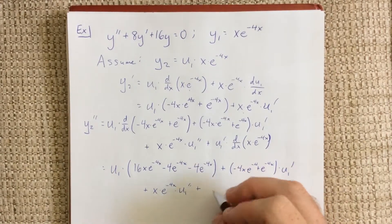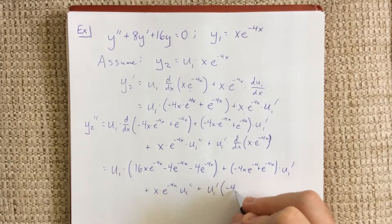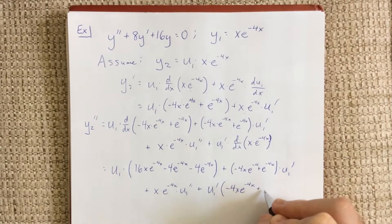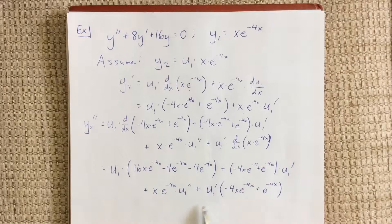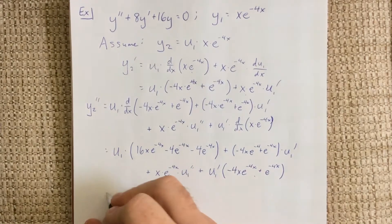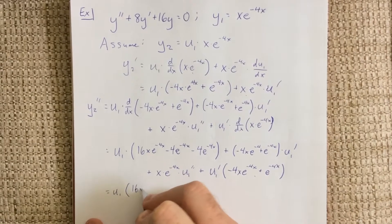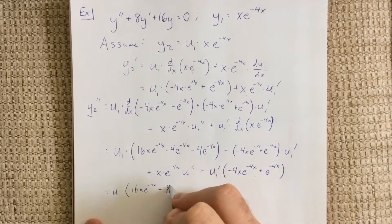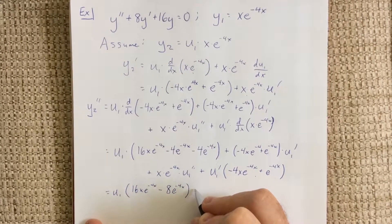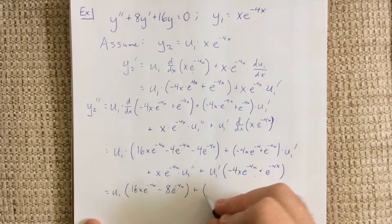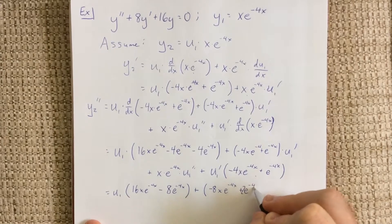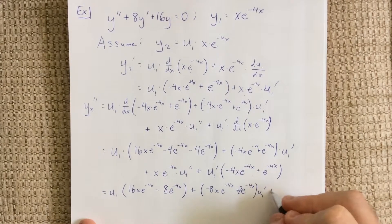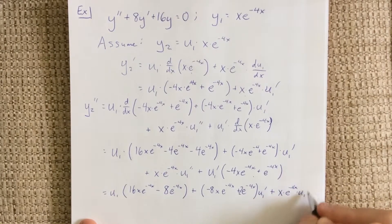Plus x times e to the negative 4x times u1 double prime, plus — using that shortcut — negative 4x e to the negative 4x plus e to the negative 4x times u1 prime. Combining like terms: we call this u1 times 16x e to the negative 4x minus 8e to the negative 4x. Since there are two of those u1 prime terms, we double everything inside the parentheses: negative 8x e to the negative 4x plus 2e to the negative 4x. And the u1 double prime term is x times e to the negative 4x times u1 double prime.